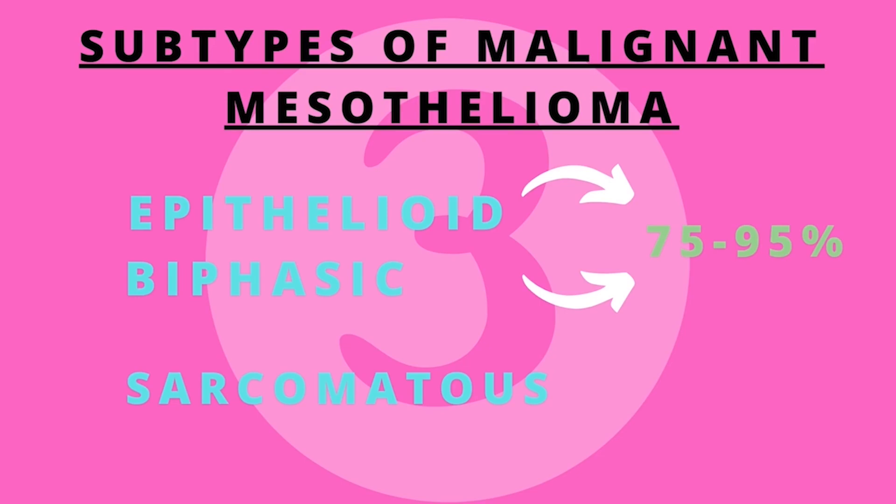Most mesotheliomas express high levels of cytokeratin-5 regardless of subtype. Epithelioid mesothelioma is characterized by high levels of calretinin, whereas sarcomatous mesothelioma does not express high levels of calretinin.